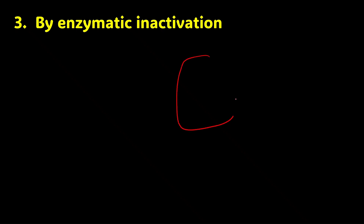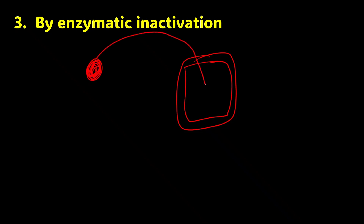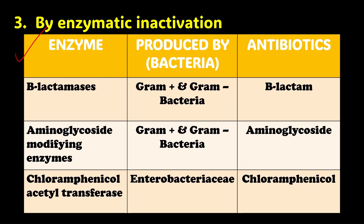The next mechanism is enzymatic inactivation. Here, even after an antimicrobial agent enters the bacteria, the bacteria produces enzymes that act on the antimicrobial agent and completely degrade or inactivate it. Let's understand this with the help of a table listing the enzyme, the bacteria producing it, and the antibiotic targeted.